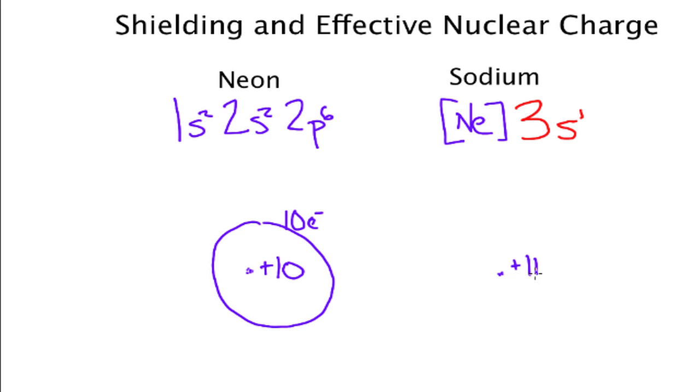And we think about the core electrons that were in neon, they're still there and they may be a little bit closer even to the nucleus because now the charge is plus 11 instead of just plus 10.